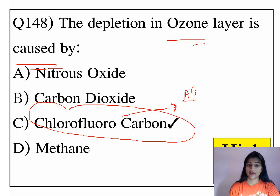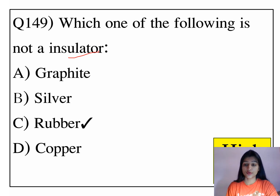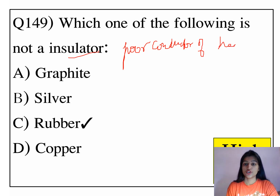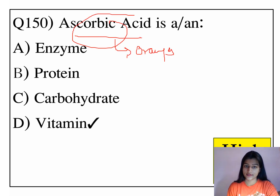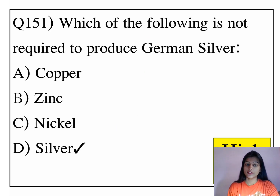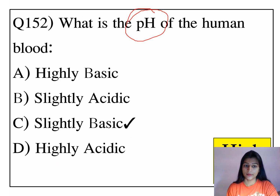Which one of the following is not an insulator? Insulators are poor conductors of heat, and the answer is rubber. Ascorbic acid is a vitamin. Which one of the following is not required to produce German silver? Silver is not required to produce German silver. What is the pH of human blood? Human blood is slightly basic.